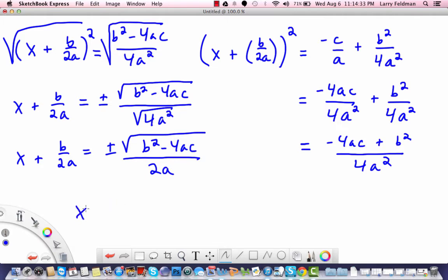And then we need to subtract b over 2a from both sides, and I'm going to put that in the front like this: negative b over 2a plus or minus square root b squared minus 4ac all over 2a. Now we're in the home stretch.